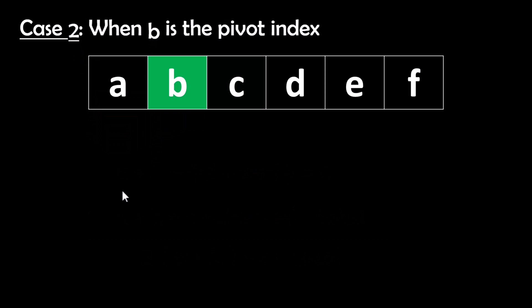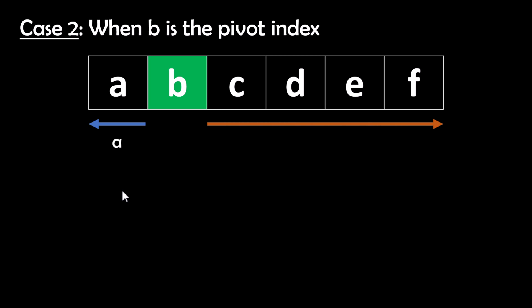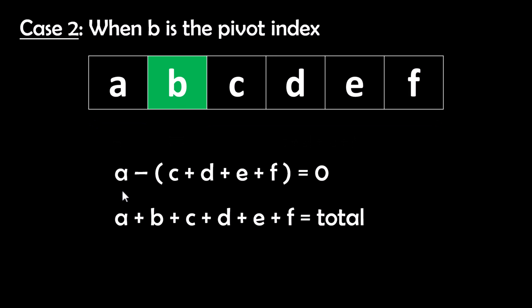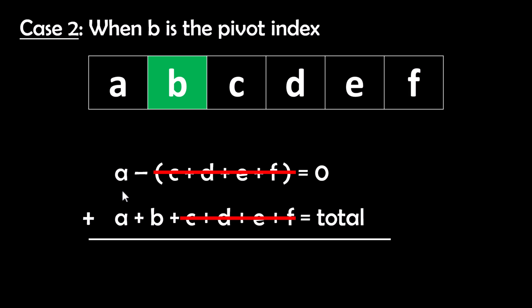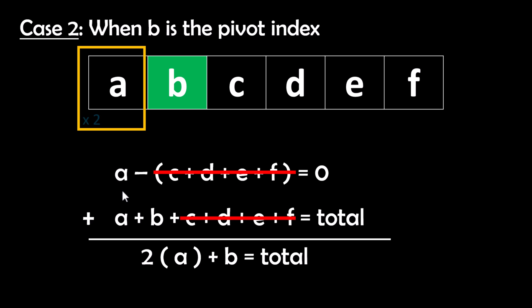In Case 2 where b is the pivot index, the value to the left is a and the values to the right are c plus d plus e plus f, and both should be equal. We take out the equation, add them up, and c, d, e, f cancel each other out, giving us 2 times a plus b equals total. This is similar to what we got in the previous case: the sum of all values to the left multiplied by 2 plus the pivot index value should equal total.